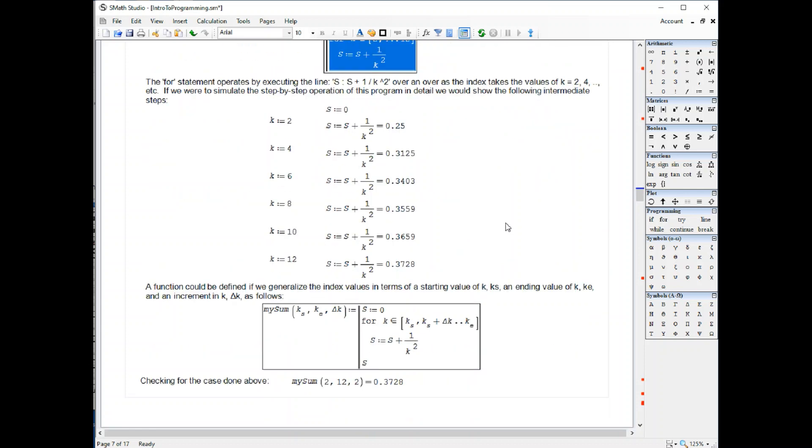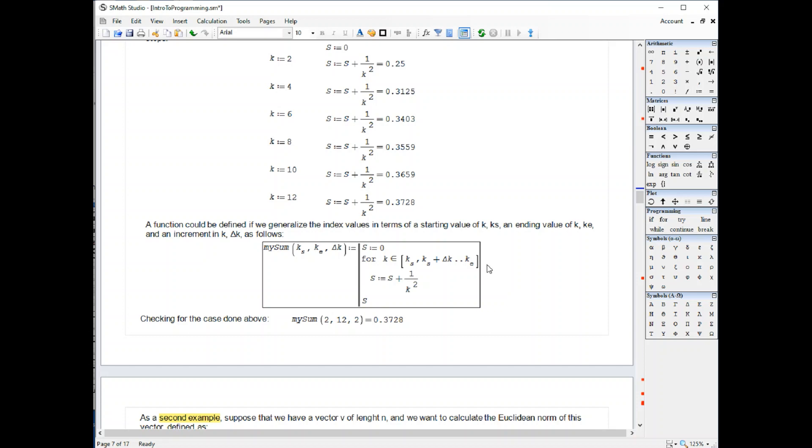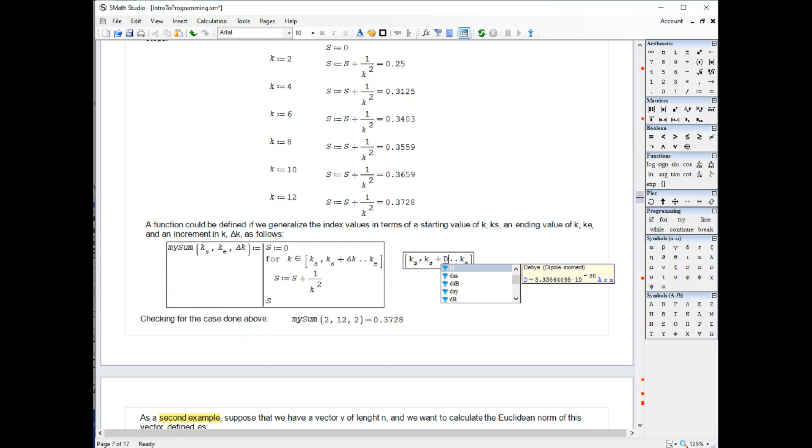Suppose that I want to generalize this and create a function that's going to calculate the sum of 1 over k squared. If I provide the initial value of k, the ending value of k, and the increment. In that case, the range that I use here will be range k.s, k.e for n, k.s plus delta k.